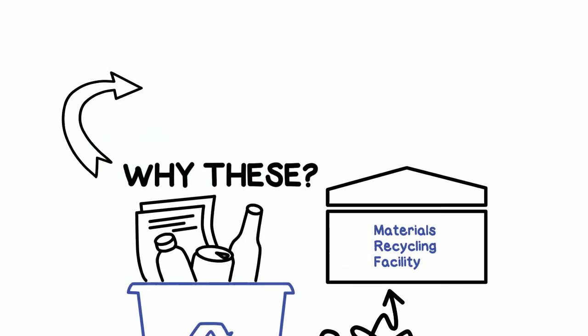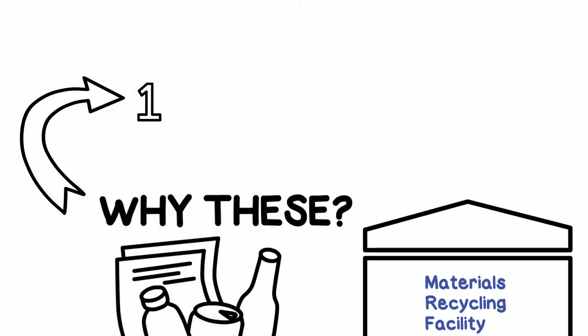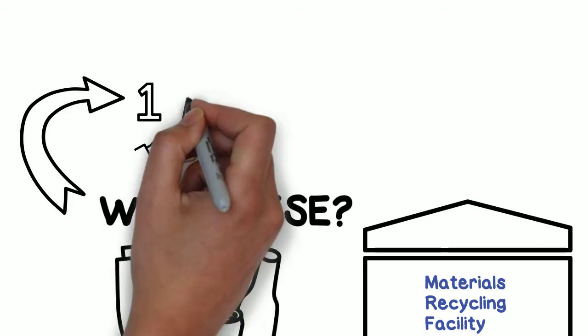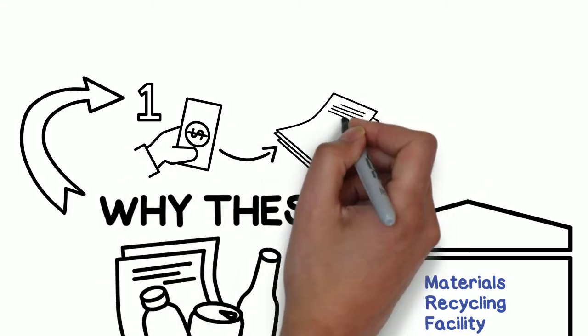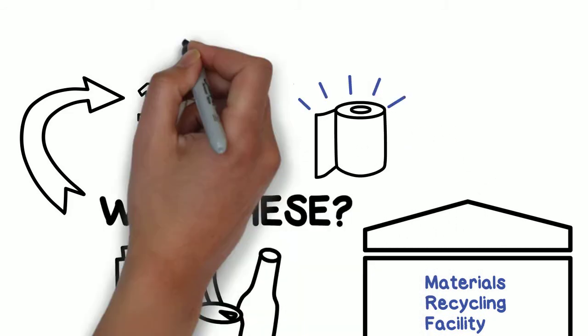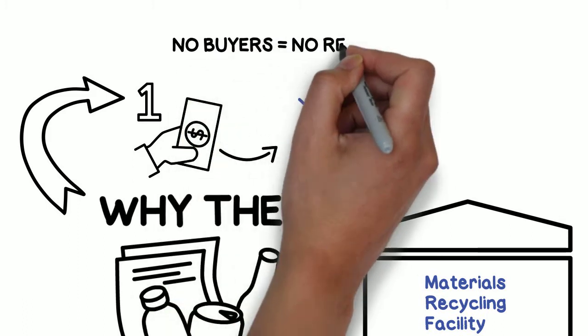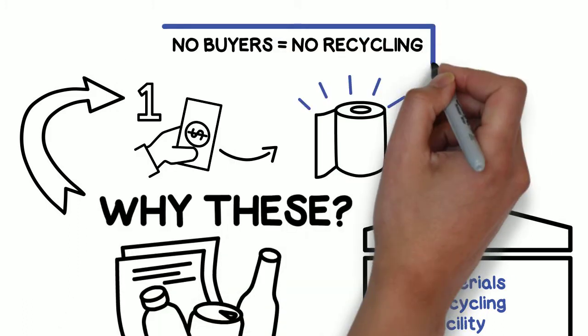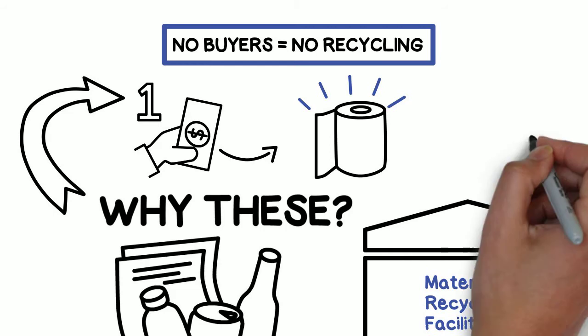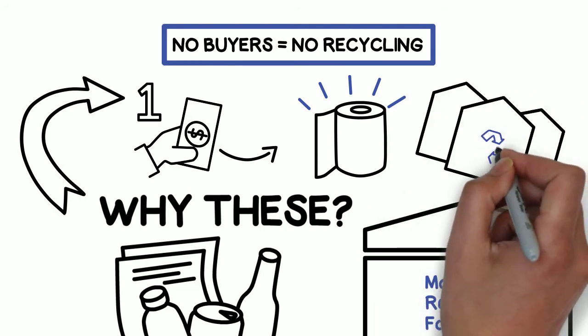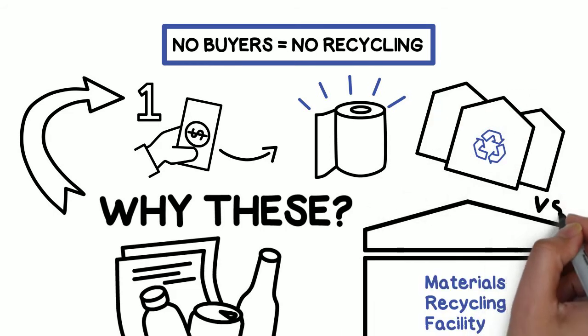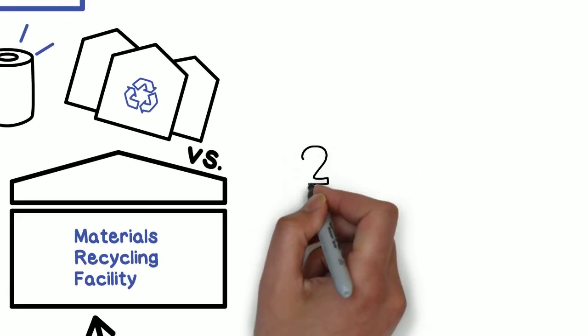First, is anyone buying this material? There have to be buyers to process the material into something new. If there are no buyers, recycling cannot happen and the material will not be accepted. Even when there are buyers, there is competition between recycling facilities to provide the desired materials.